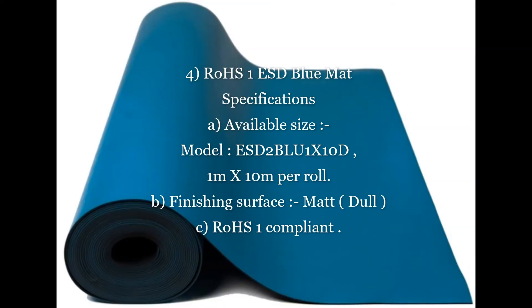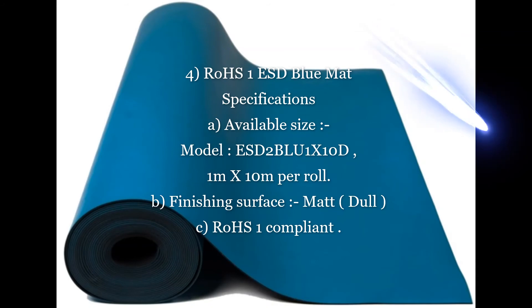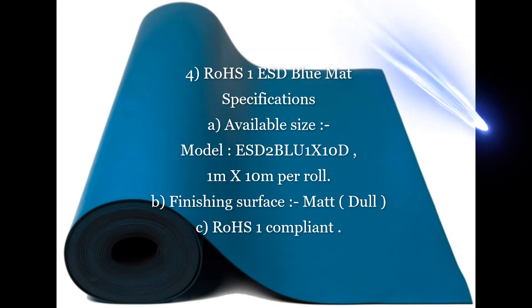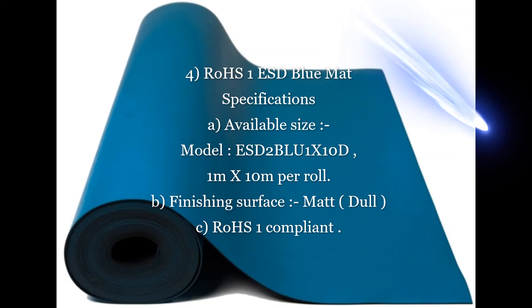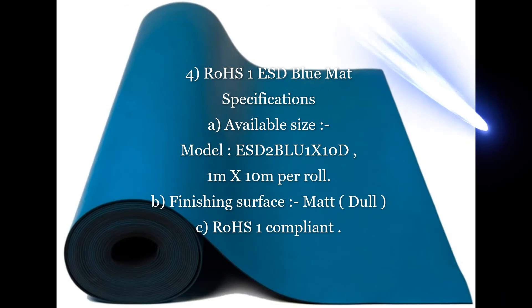Product 4: RoHS 1 ESD Blue Mat Specifications. A. Available size — model HTESD 2 APL 1 x 10D, 1 m x 10 m per roll.